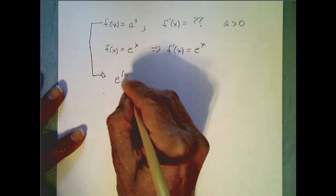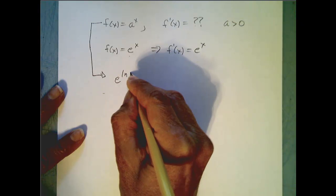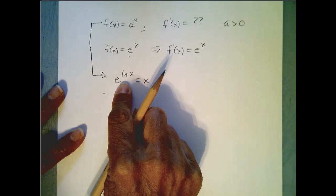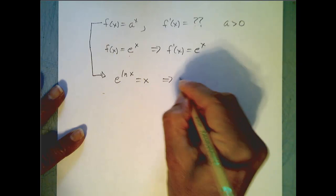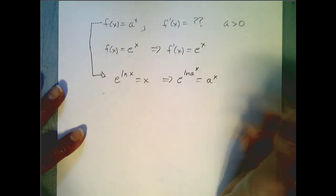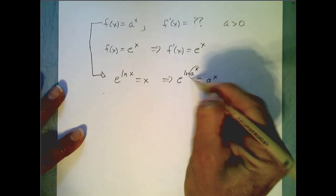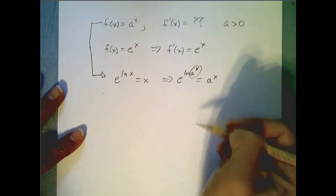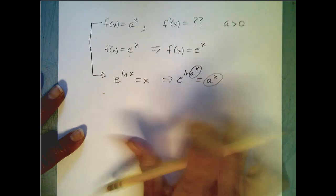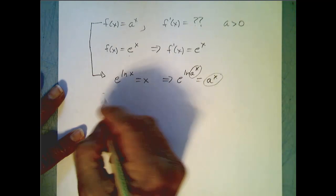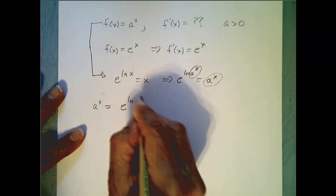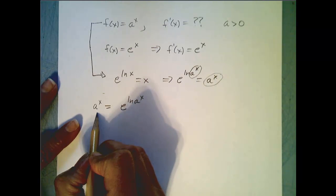Since e to the ln of x equals x, because it is the composition of inverse functions, this means that e to the ln of a to the x equals a to the x. What goes in to the composition of inverse functions comes back out. That's what this rule says and we are applying it to a to the x. So this is a nice technique used in order to get a to the x in terms of e.